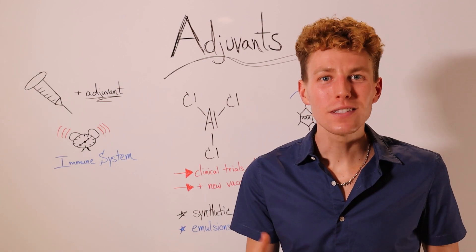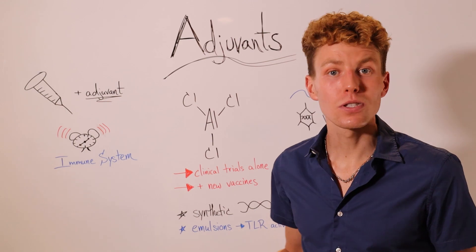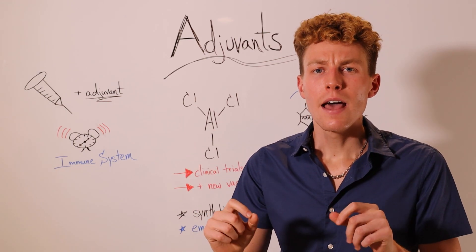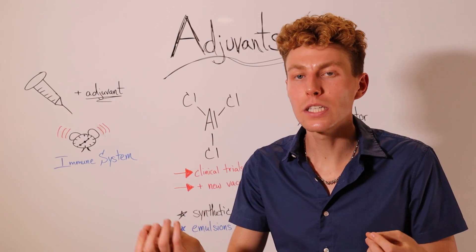But there's other types of adjuvants that are also used in the market, one of them being synthetic DNA. So that DNA is made in the lab and it's just very small pieces that is made to replicate little pieces of DNA that comes from viruses or bacteria.